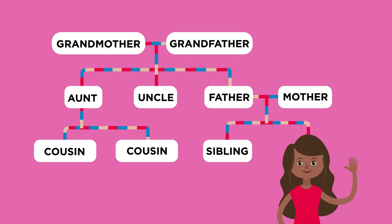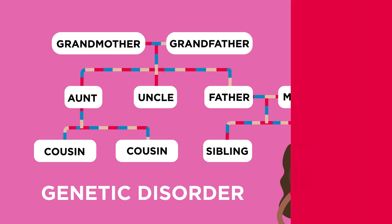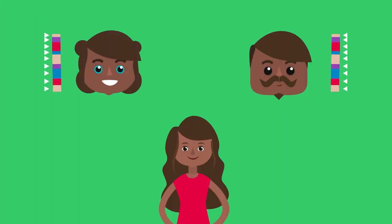Well, polydactyly is an example of a genetic disorder. It is inherited. You inherit genes from your parents and you have two copies of each gene, one from your mother and one from your father.